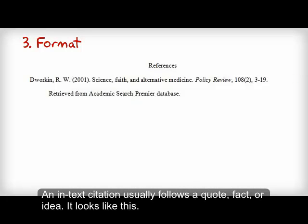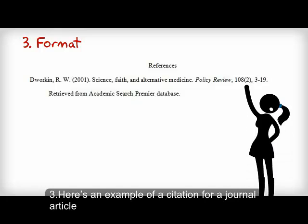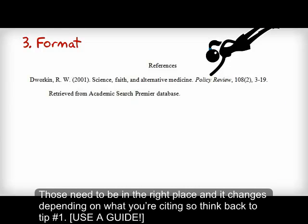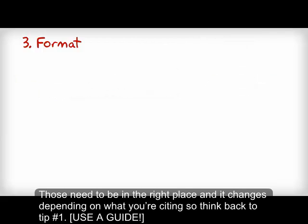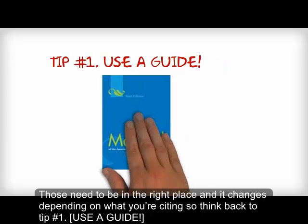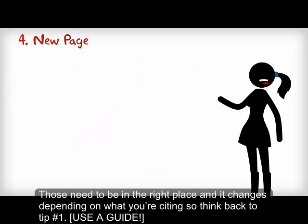Tip 3: Here's an example of a citation for a journal article. See all the parentheses and commas and italics? Those need to be in the right place, and it changes depending on what you're citing. So think back to tip number one.